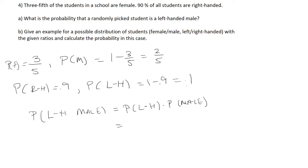Left-handed is 0.1. Probability of a male is two-fifths. So this is 0.04. So this is for part A.